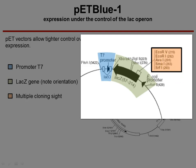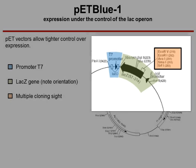The multiple cloning site is shown here at the top, and it's a collection of sites for type 2 restriction enzymes. Type 2 restriction enzymes break open our bacterial vector and allow us to ligate in our DNA insert.